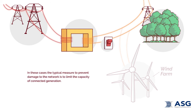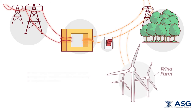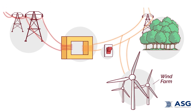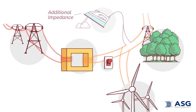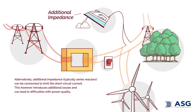Alternatively, additional impedance in the form of, for example, series reactors can be connected to limit the short circuit current. This however introduces additional losses and can lead to difficulties with power quality, causing the supply voltage to vary with varying demand.